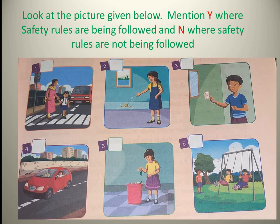In all these 6 pictures, different activities are going on. Look at the pictures very carefully and find out which activity leads to an accident. Pictures 2, 3, and 4 show activities where things are not going according to the rules — these are things that can lead to an accident.